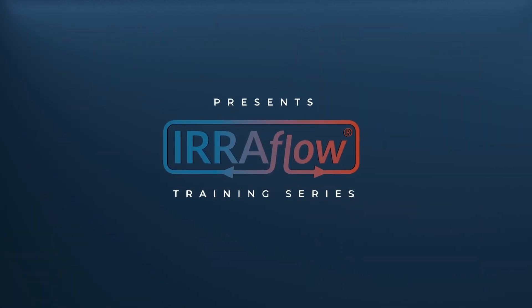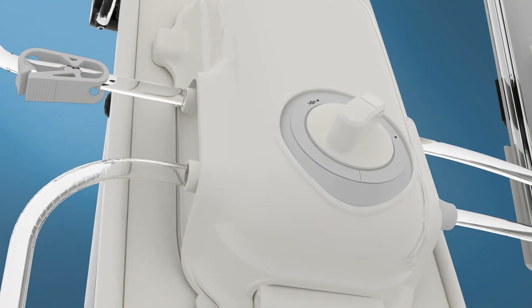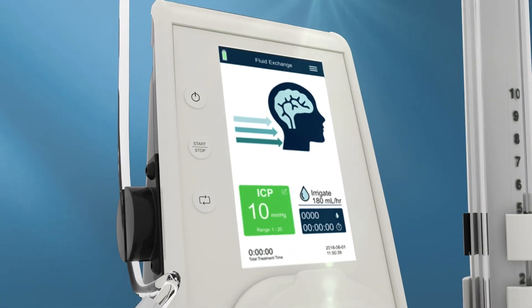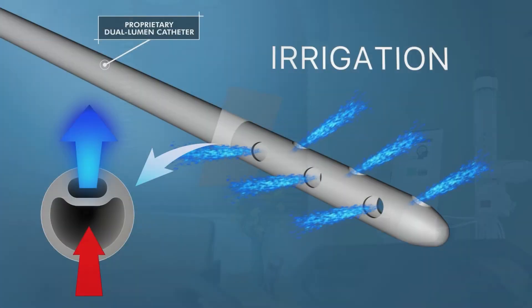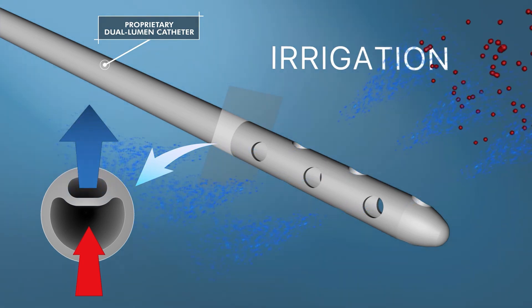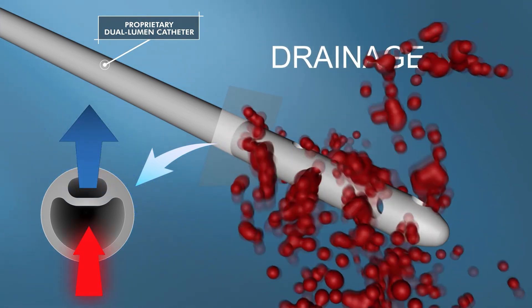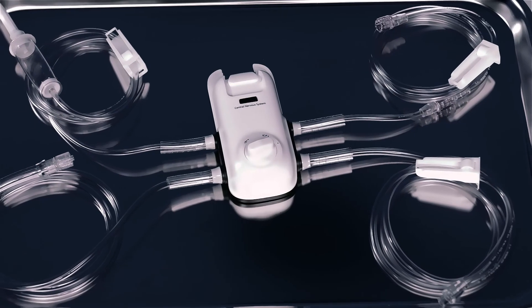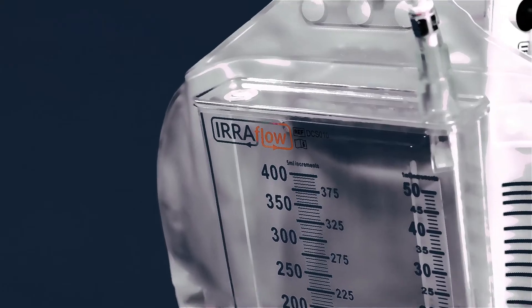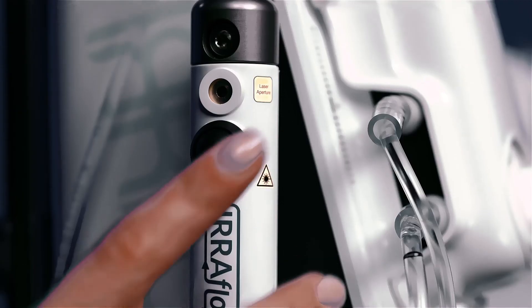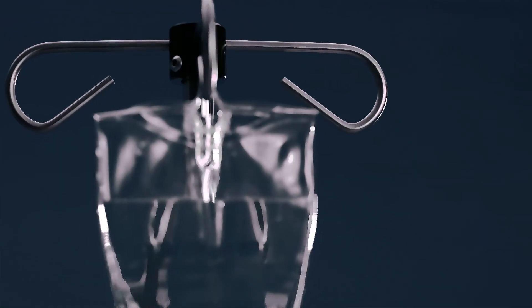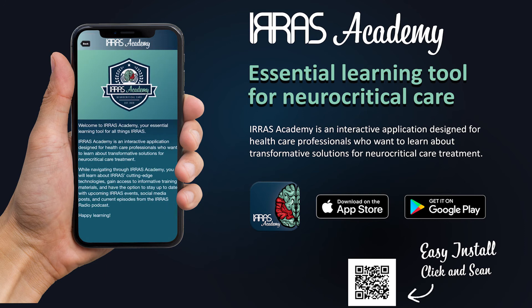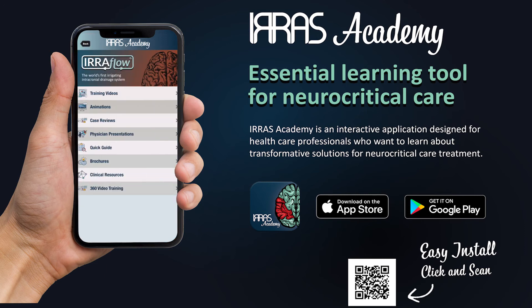Thank you for watching the ERA Flow system educational training videos. We hope you found these videos helpful and are excited for you to use the ERA Flow technology to therapeutically treat intracranial bleeding. ERA Flow's unique mechanism of action — active fluid exchange — addresses the historical shortcomings of legacy drainage technology by offering automated irrigation, controlled drainage, and continuous ICP monitoring, all in one system. If you have additional questions, please reference the ERA Flow instructions for use, download the IRIS Academy app, or contact your IRIS sales professional.